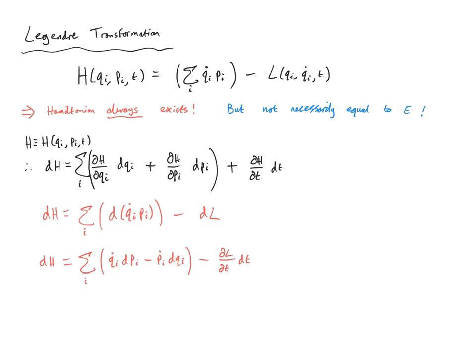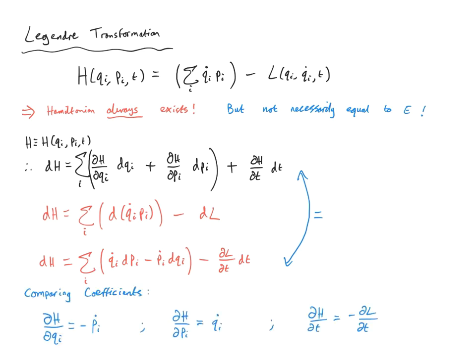Comparing our two expressions for dH term by term yields Hamilton's equations. Comparing dq_i coefficients: ∂H/∂q_i = −ṗ_i, the first Hamilton equation. Comparing dp_i coefficients: ∂H/∂p_i = q̇_i, the second Hamilton equation. And comparing dt coefficients: ∂H/∂t = −∂L/∂t, so the time dependence of the Hamiltonian equals, up to a minus sign, the time dependence of the Lagrangian.